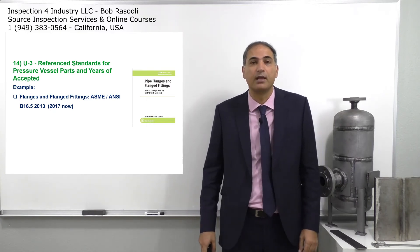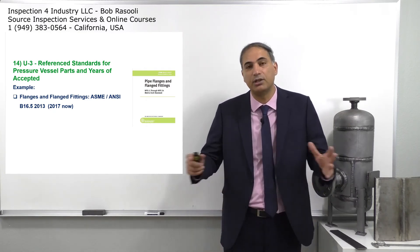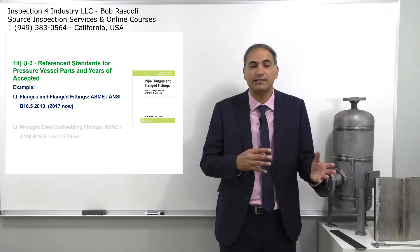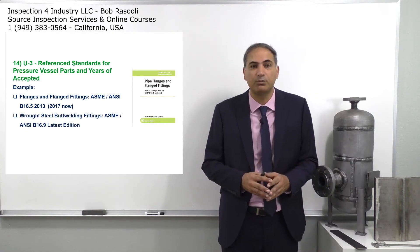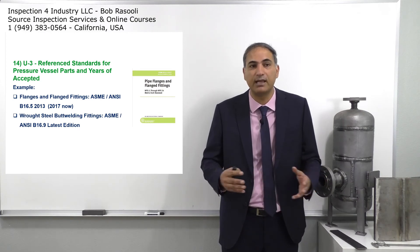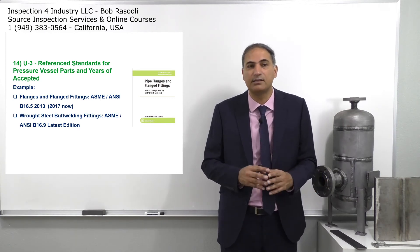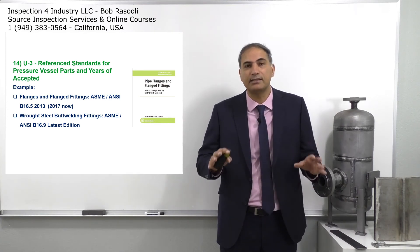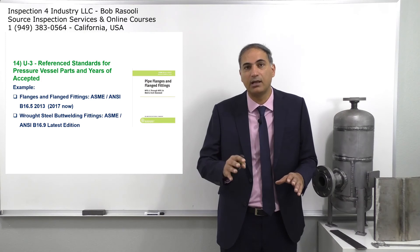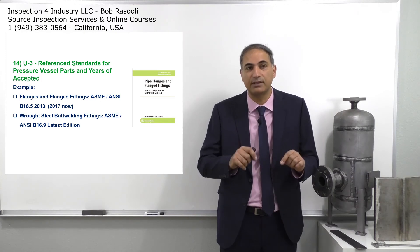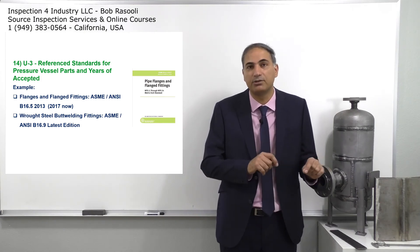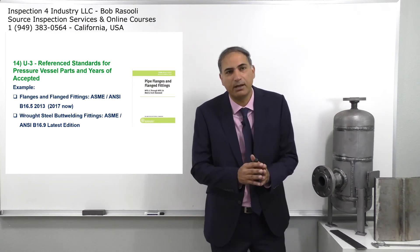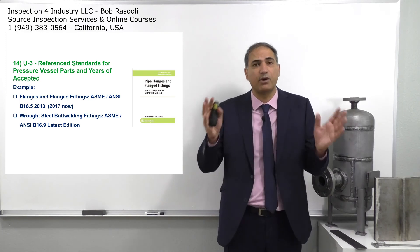Another example: butt welding fittings are based on ASME B 16.9. For this standard, the latest edition applies — design, inspection, and testing should be performed based on the latest edition of B 16.9. This is different from B 16.5, where a specific older edition is required as indicated in U3.